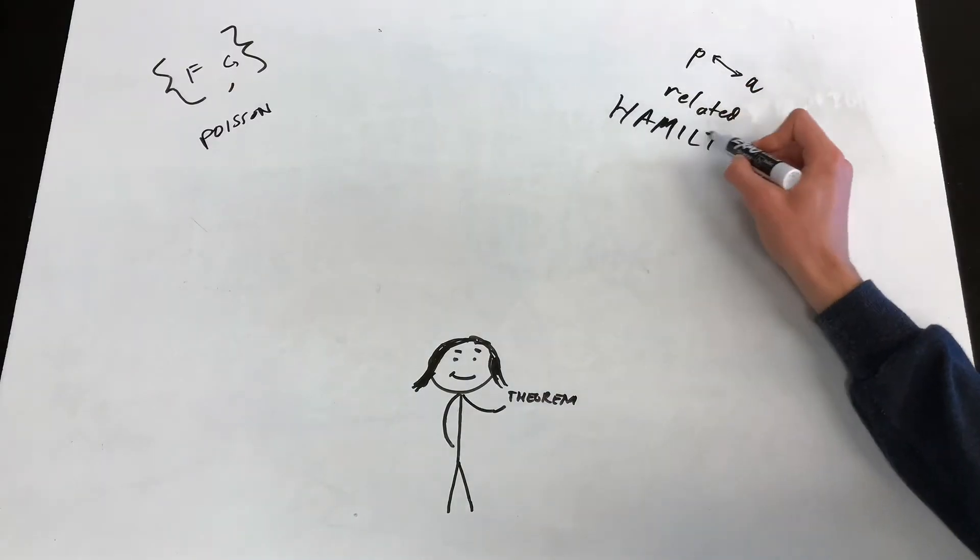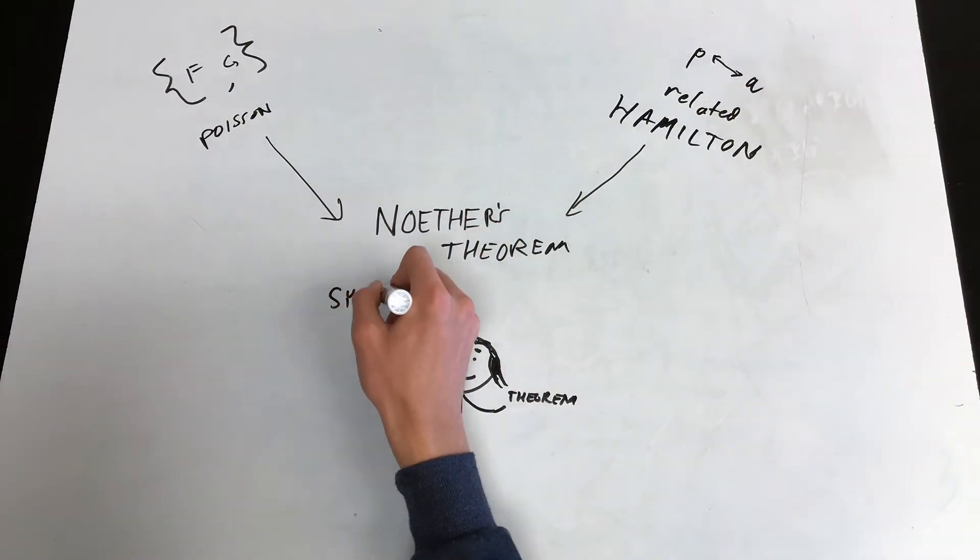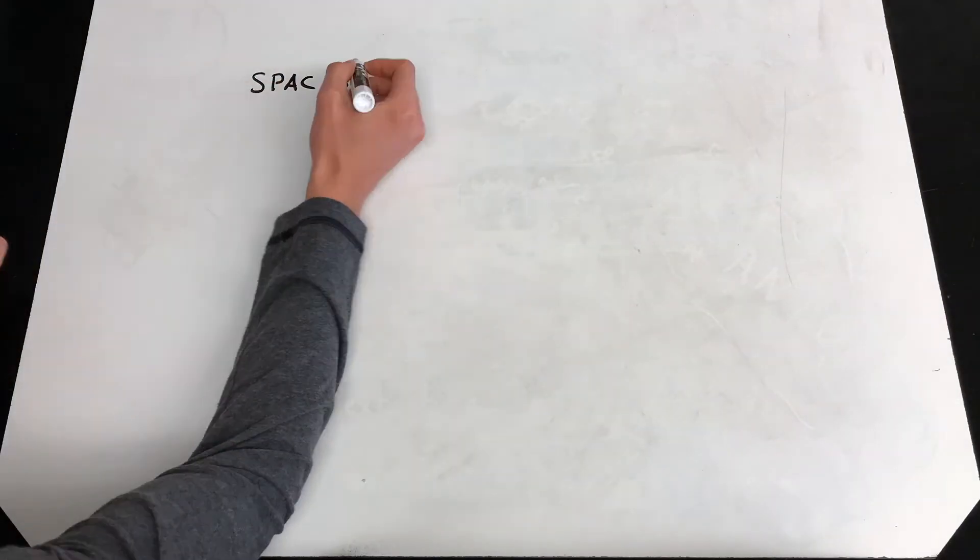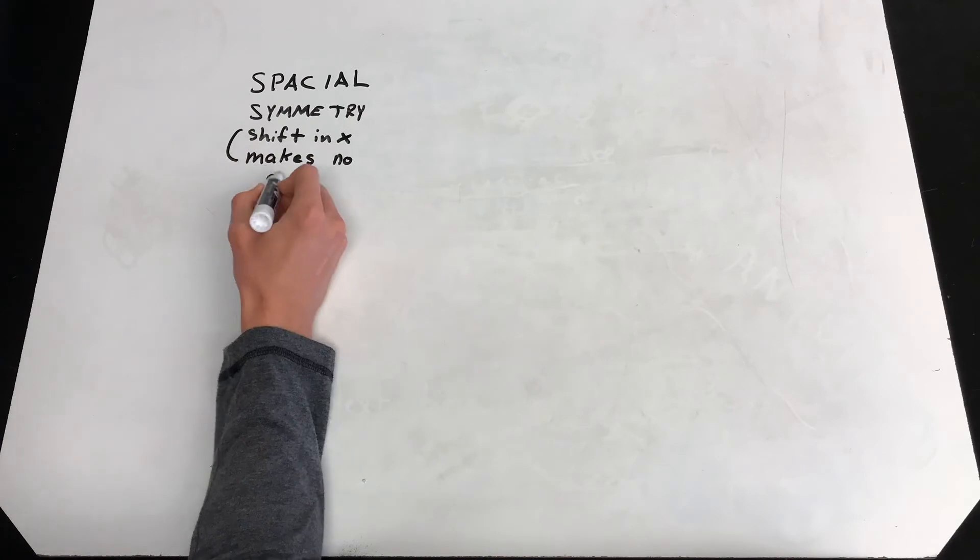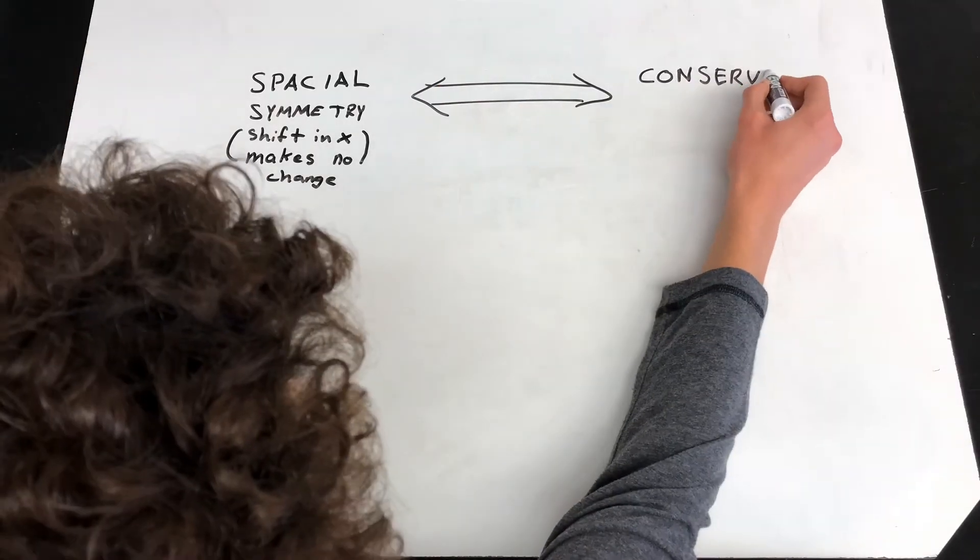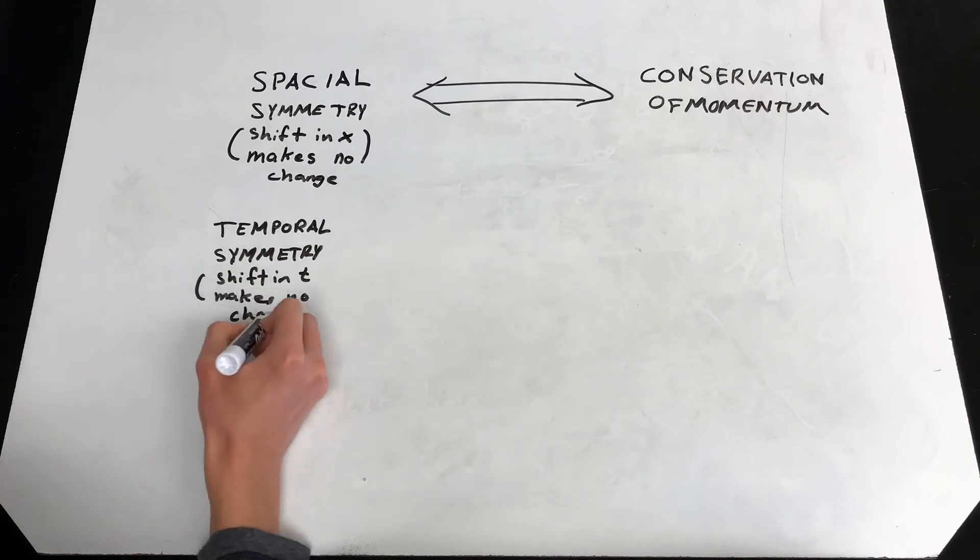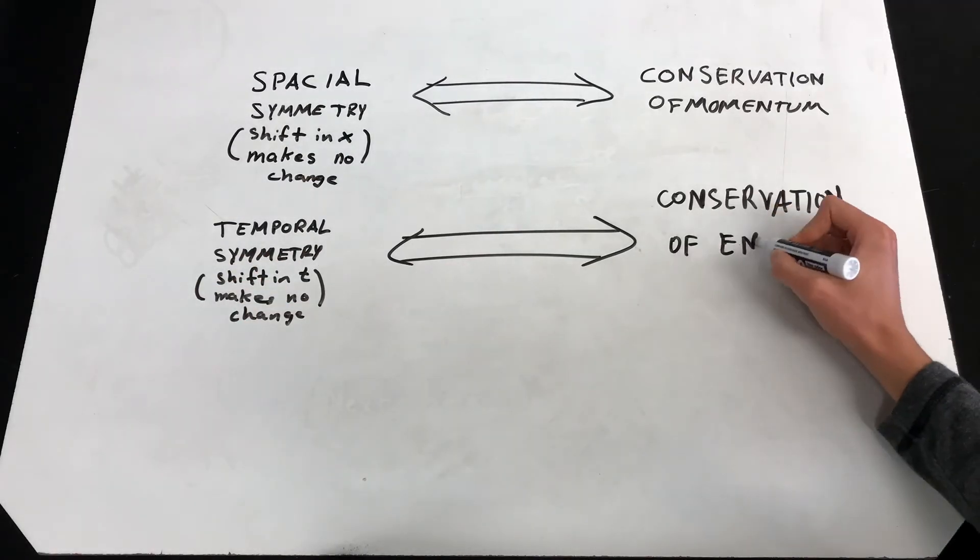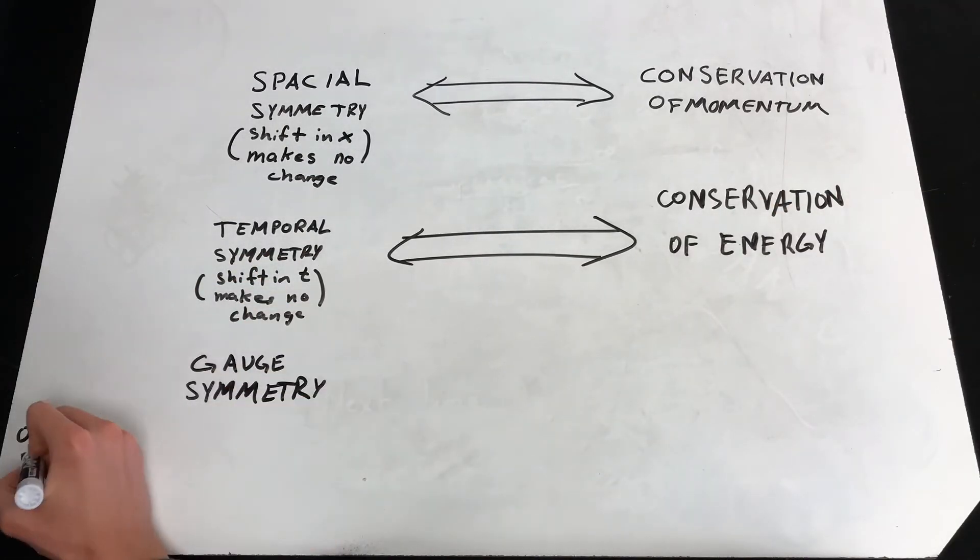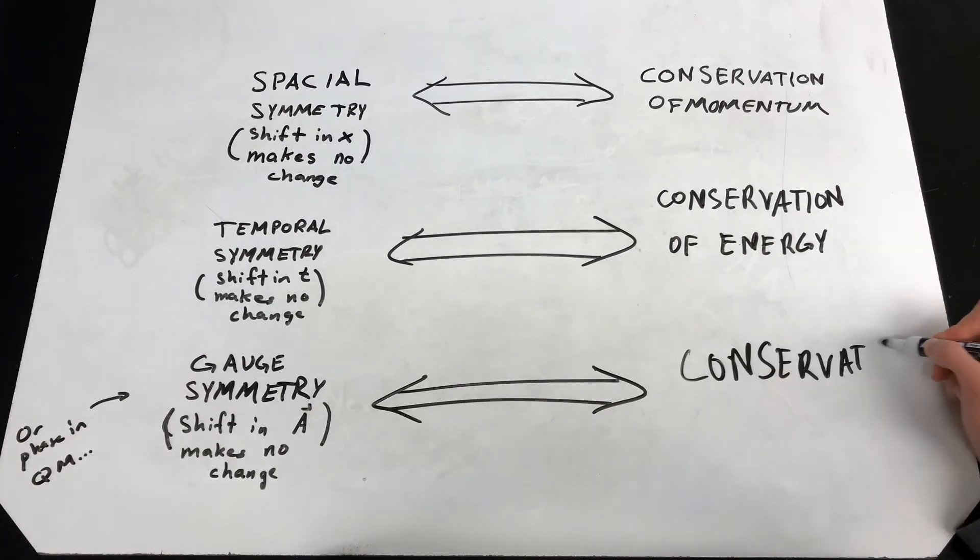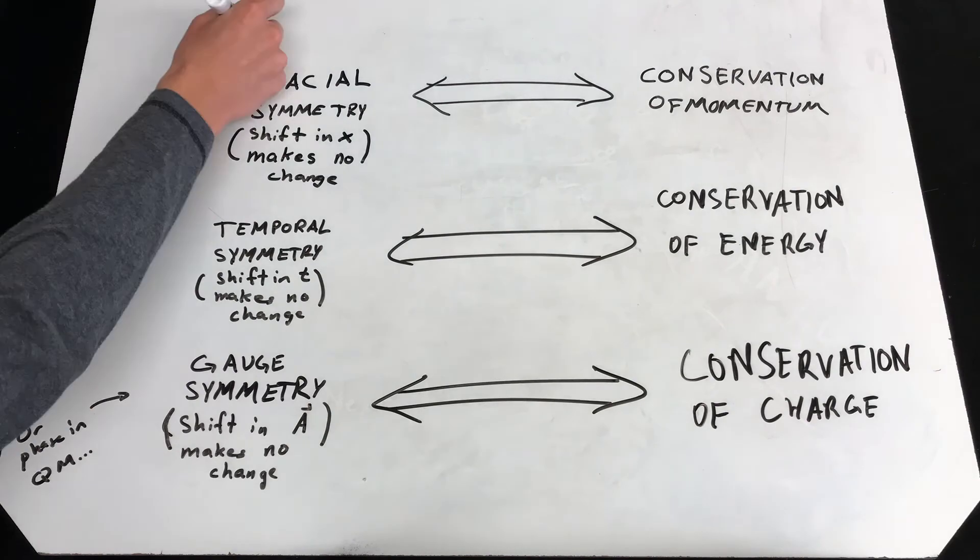In any case, she worked off of Poisson's brackets and the link between momentum and position with Hamilton to discover the most beautiful theorem ever. She found that if you shift an experiment in some way and the result doesn't change, there's a specific quantity that was conserved. If you shift an experiment in space, and it's the same, momentum was conserved. In time, energy was conserved. And finally, if you shift the gauge, or as humanity will later see, something called the phase of an experiment, charge was conserved. But those topics deserve a video of their own.